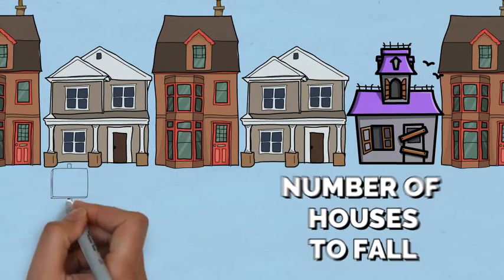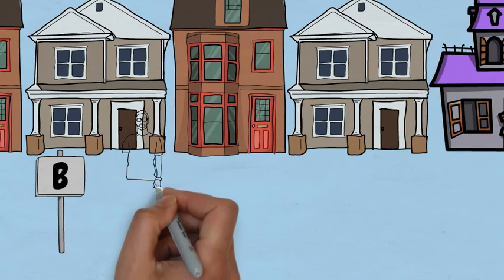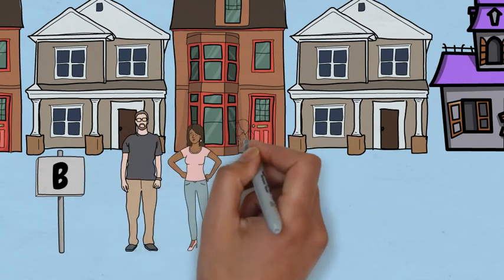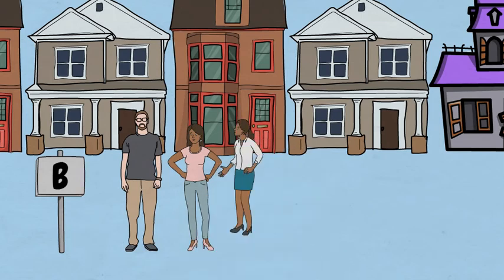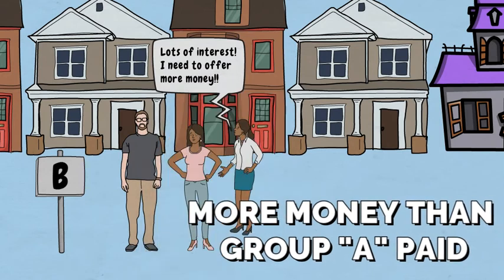Group B comes along and notices there are fewer options to buy. So they then realize they need to be offering higher prices to obtain them. Group B get the houses they want but for more money than group A paid.